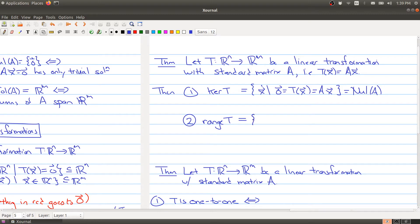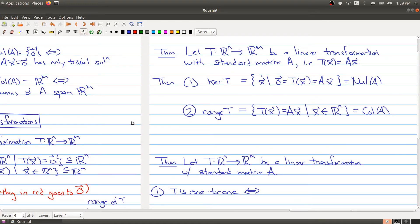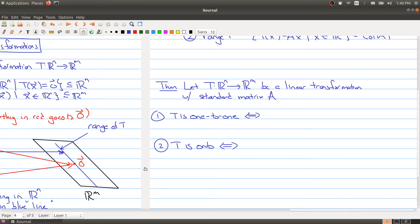And similarly, the range is defined to be all the values of the form T(x), which is the same thing as all output of the form Ax as we let x run through Rn. And we saw this earlier that this is simply the column space of A. So the range and the kernel are precisely connected to the column space and the null space. And we can say a little bit more now by using this language.